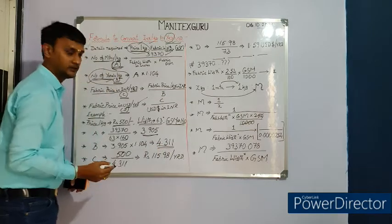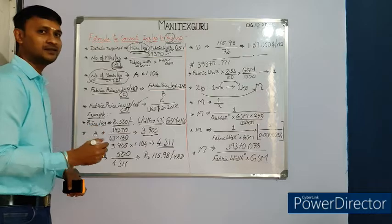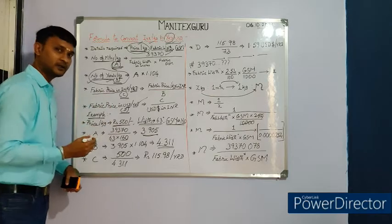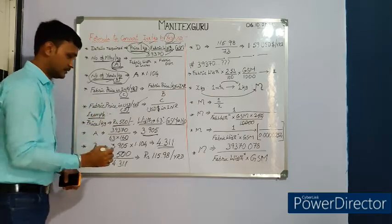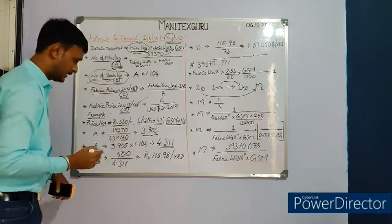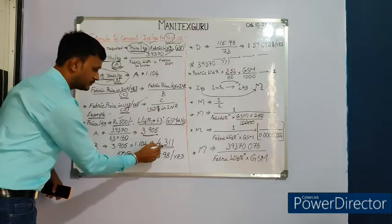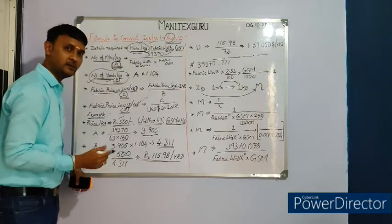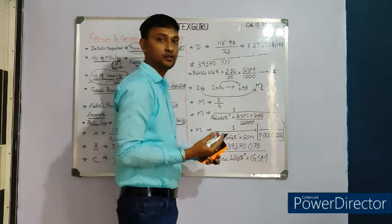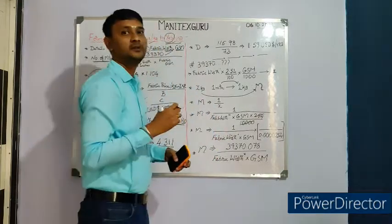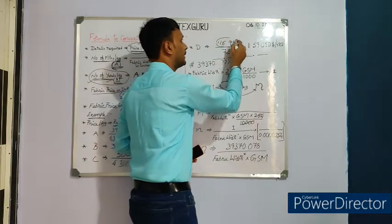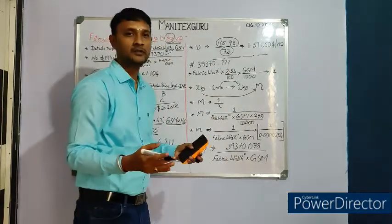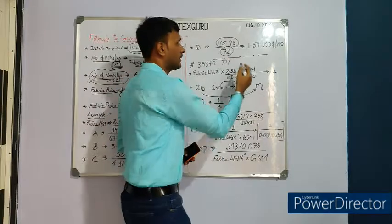Step C: fabric price in INR per yard. We already have the number of yards per kg (4.311) and the fabric price per kg (₹500). Dividing ₹500 by 4.311 gives the fabric price in INR per yard.